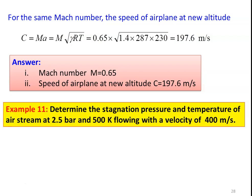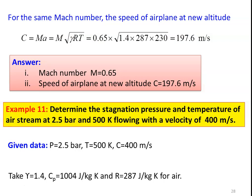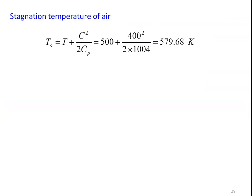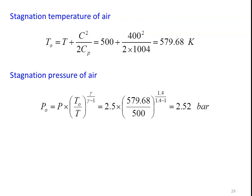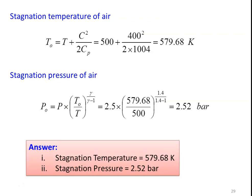Example 11: Determine the stagnation pressure and temperature of an air stream at 2.5 bar and 500 K with a velocity of 400 m/s. Given: P = 2.5 bar, T = 500 K, velocity = 400 m/s, γ = 1.4, Cₚ = 1004 J/kg·K. Stagnation temperature: T₀ = T + C²/2Cₚ = 500 + 400²/(2 × 1004) = 579.68 K. Stagnation pressure: P₀ = P × (T₀/T)^(γ/(γ−1)) = 2.5 × (579.68/500)^(1.4/0.4) = 2.52 bar. Answers: stagnation temperature = 579.68 K, stagnation pressure = 2.52 bar.